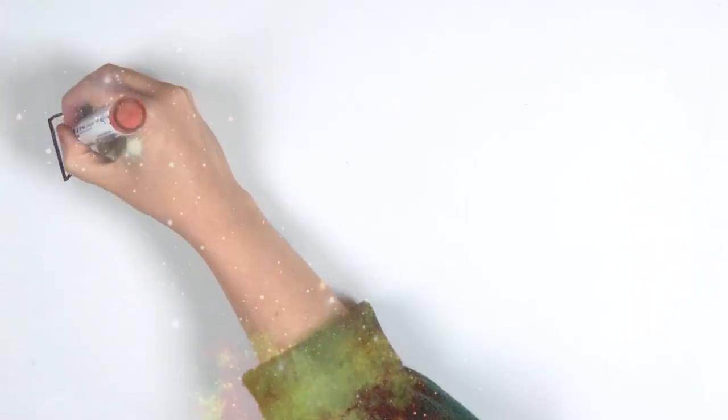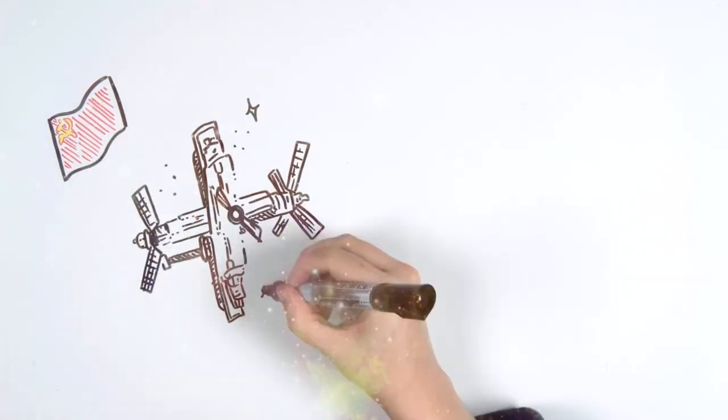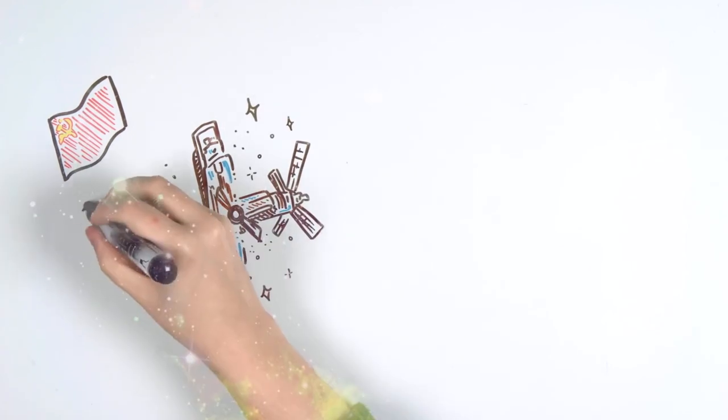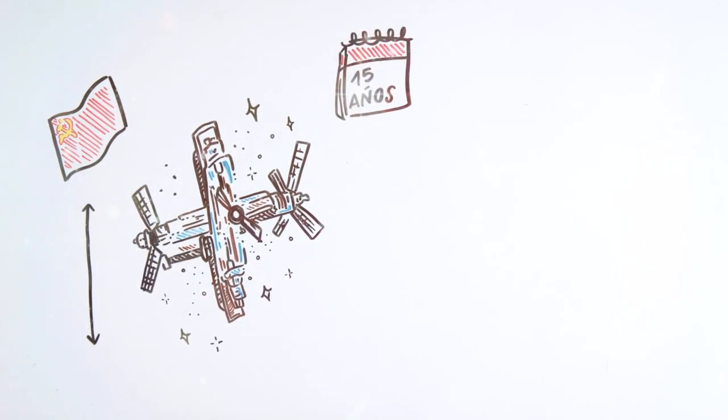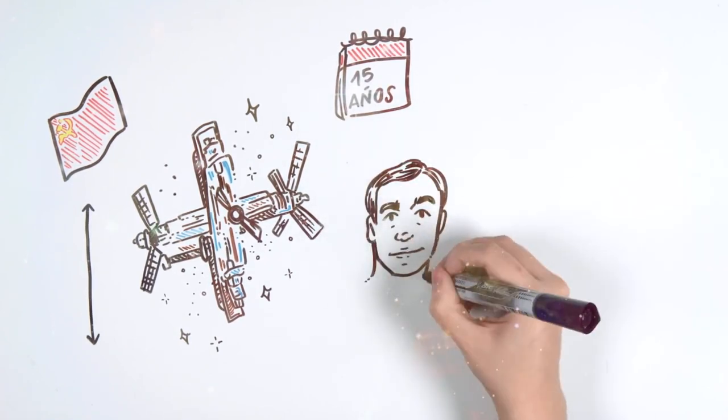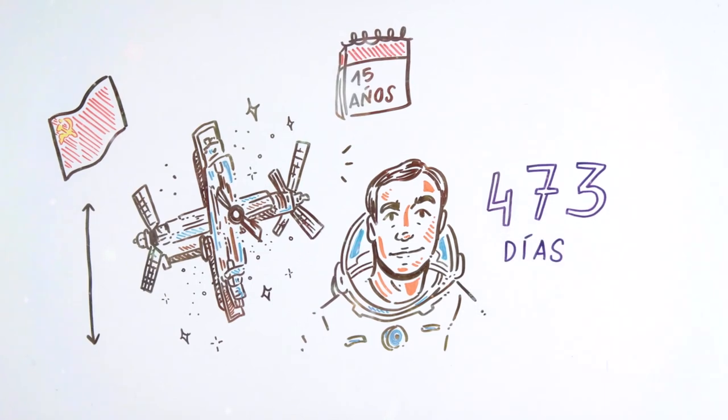After the space station Salyut, Russia sent a new model of space station known as MIR, twice the size of the first space station. The MIR station remained in orbit for 15 years. The longest space travel was achieved by astronaut Valeri Polyakov, who spent 437 days at the MIR station.